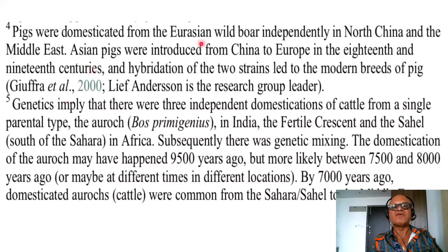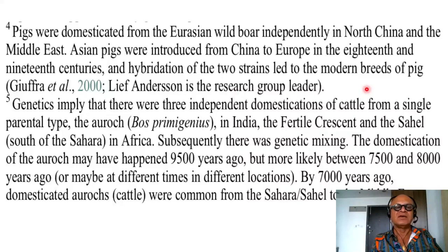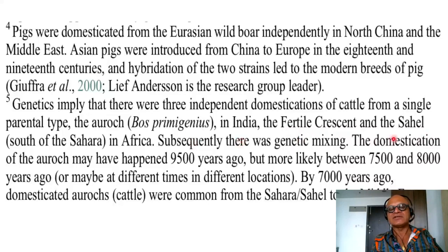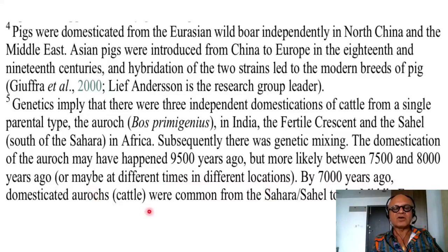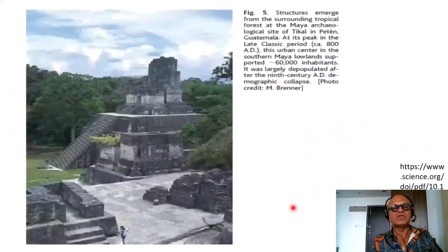Ongoing research by Olson and Kapo is based on the presence of coral posts in Kazakhstan dated 5,600 years ago; soil within the coral has phosphate and sodium levels typical of horse manure, and many horse bone fragments representative of entire skeletons were uncovered. Since there was no evidence of farming, the horse was the primary source of protein supplemented by gathered plant material. Pigs were domesticated from the Eurasian wild boar independently in North China and in the Middle East; Asian pigs were introduced to Europe in the 18th and 19th century, and hybridization led to modern breeds. Genetics imply three independent domestications of cattle from the auroch in India, the Fertile Crescent, and the Sahel. The domestication of the auroch may have happened 9,500 years ago, but more likely between 7,500 and 8,000 years ago. By 7,000 years ago, domesticated aurochs were common from the Sahara and Sahel to the Middle East.